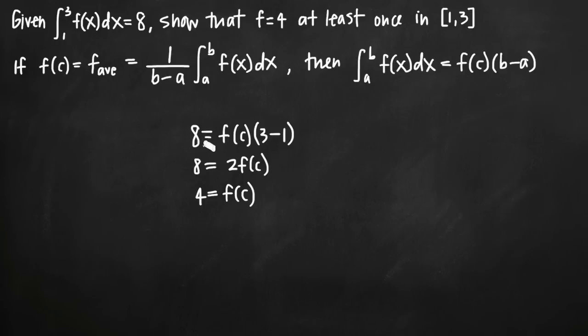Keep in mind that even if we weren't given this value, f equals 4, we could have still plugged in 8 and plugged in 3 and 1 to our formula here and solved for f of c. That would have given us the average value of the function.